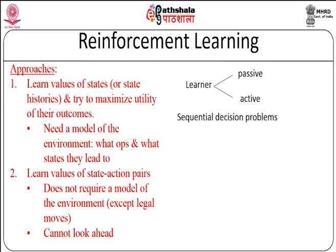From another viewpoint, reinforcement learning is a sequential decision problem because you have one state, take an action, go to the next state, then take another action, go to the next state, and so on until you get the maximum rewards. In passive learning, we have a fixed policy and learn values of states or state histories to maximize the utility of their outcomes — we need a model of the environment: what operations are available and what states they lead to. In active learning, we learn values of state-action pairs, so given a state and an action, which is the best action to take, and this does not require a full model of the environment, only knowledge of the legal actions from a state.